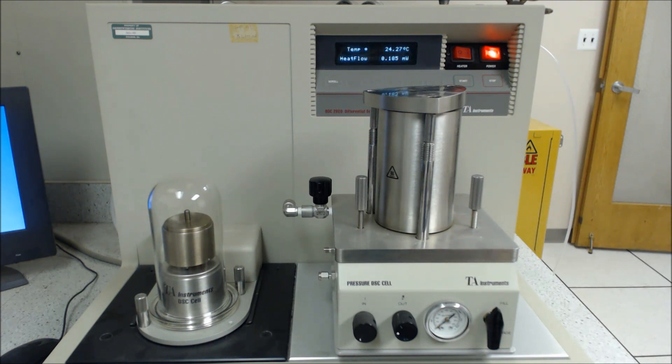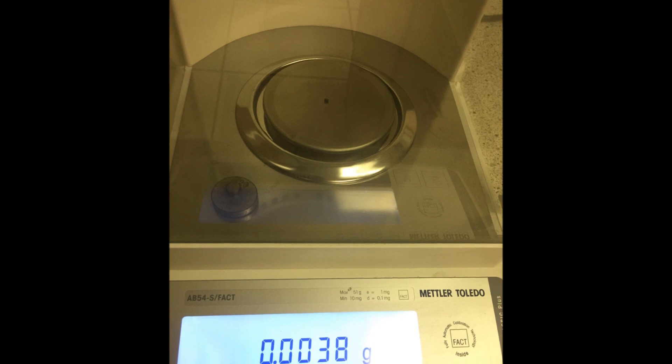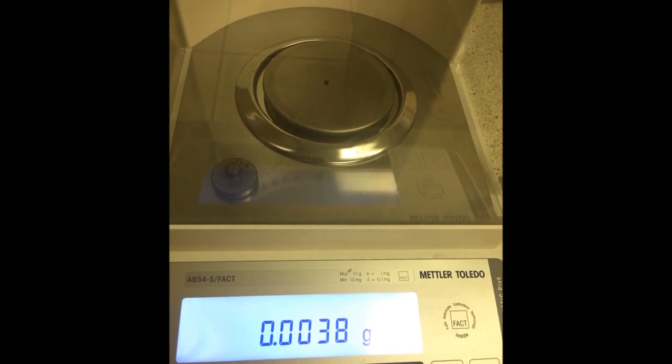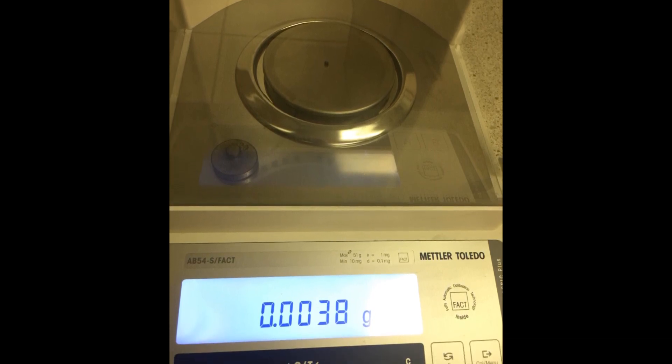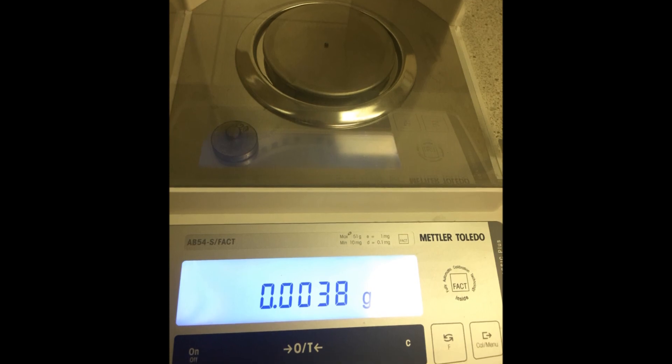Today however we will be focusing on the standard OIT cell for running these tests. To set up the test, first cut a 3.5 ± 0.5 microgram square specimen out with a razor blade. Place the specimen into a sample pan.